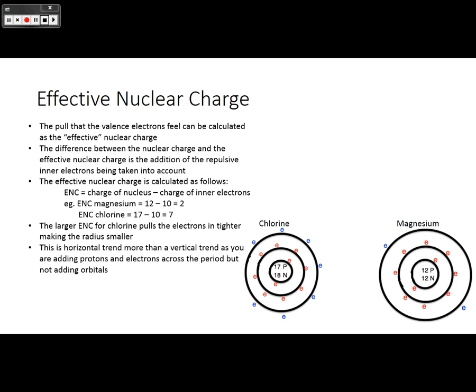This trend of effective nuclear charge is more horizontal than vertical as you're adding protons and electrons across the periodic table, but you're not adding orbitals. So we're not seeing that shielding effect issue, but we are seeing the proton number increasing, so that charge of the nucleus increasing, but we're not actually seeing inner electrons increasing, which is why this is more of a horizontal trend than a vertical trend.